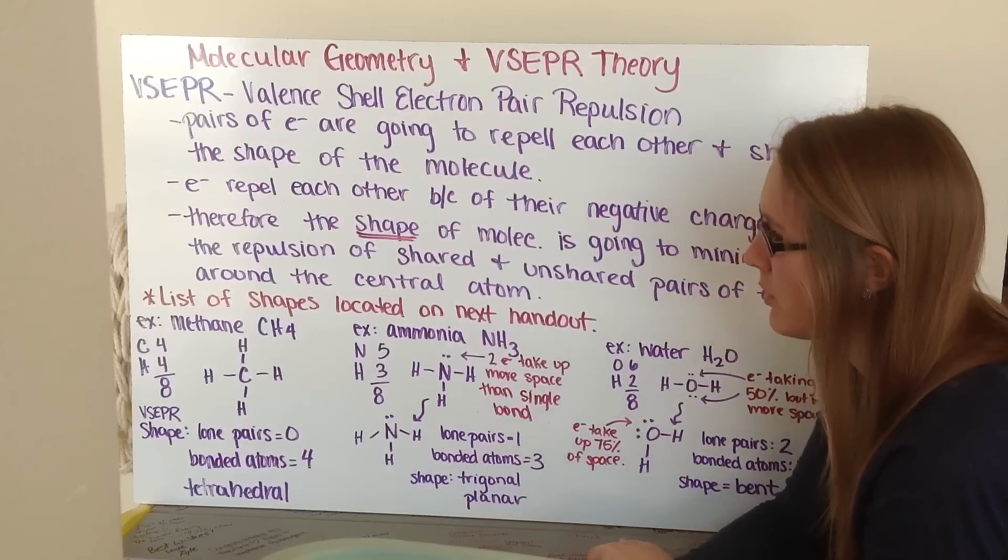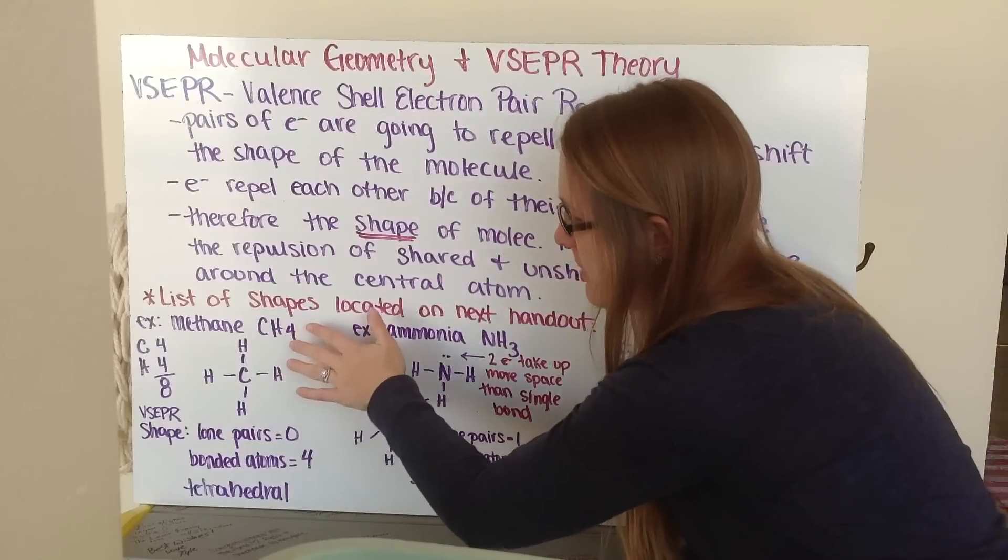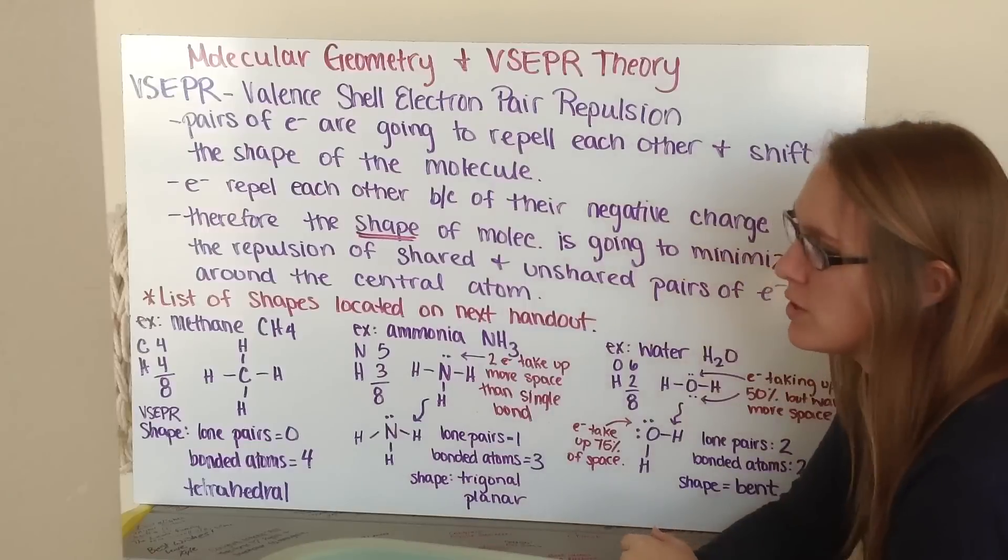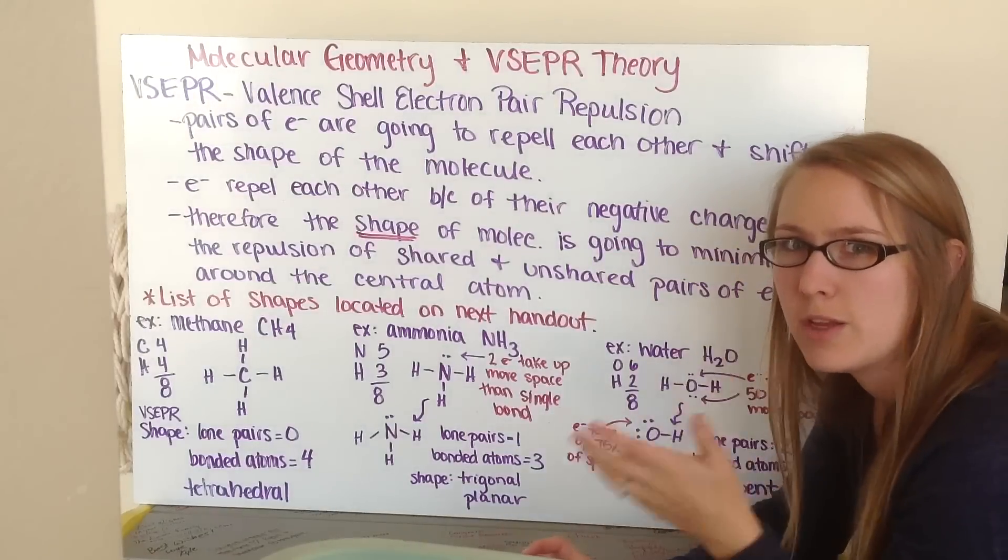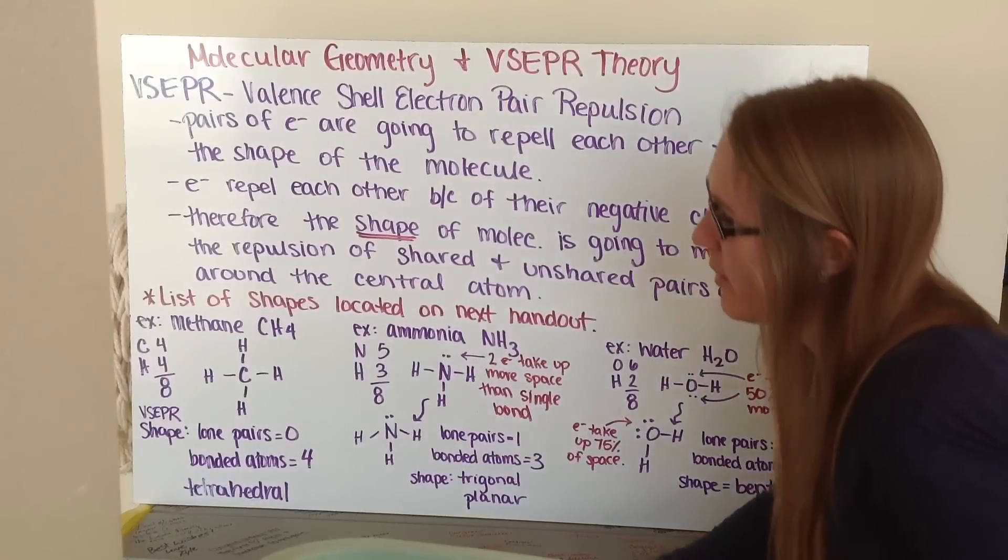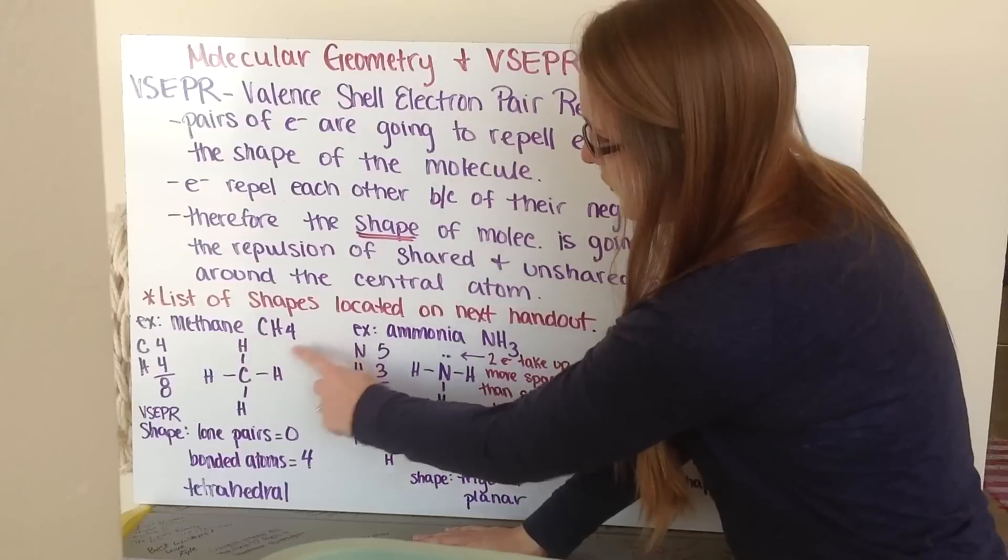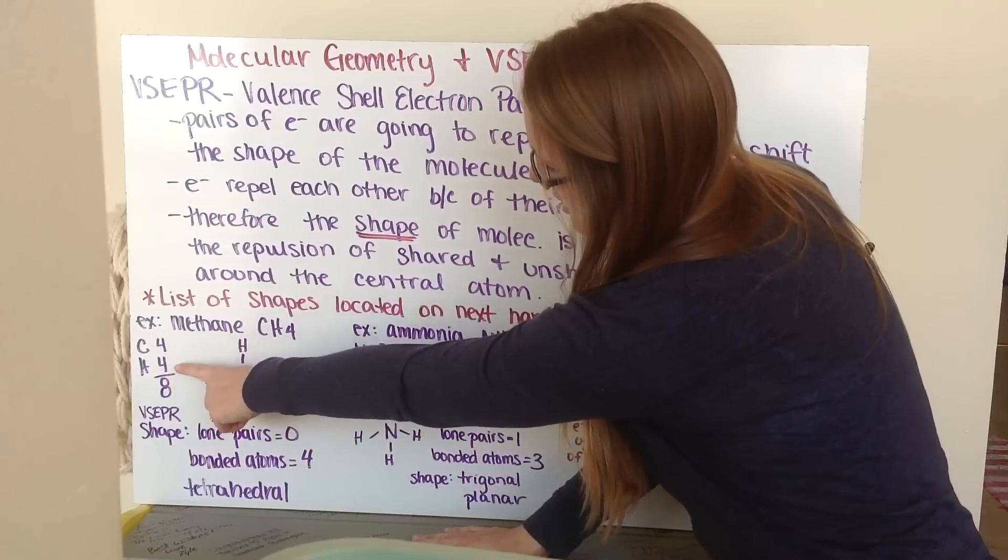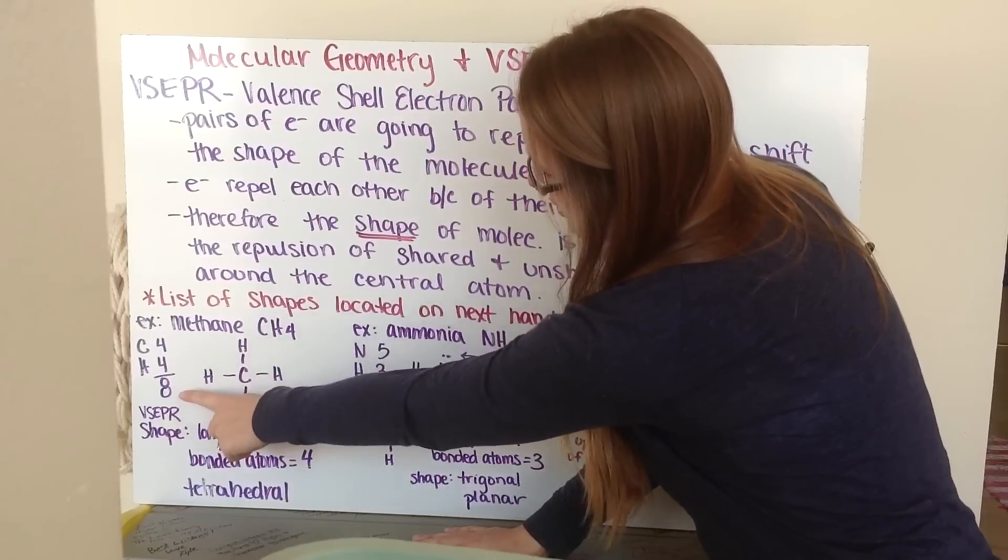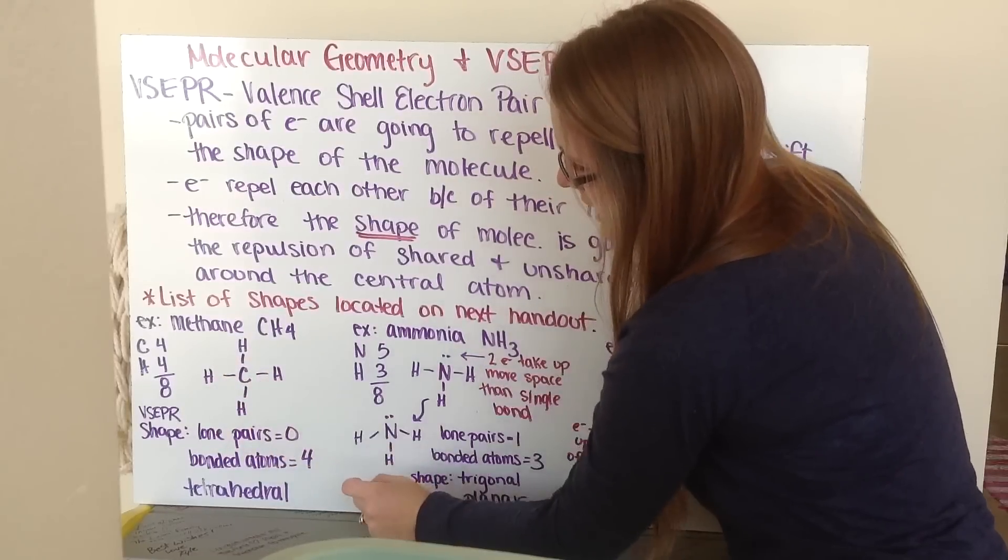As we go through our examples, we have our example here of methane. The first thing we want to do is draw our Lewis structures. Now you've spent the last day or two drawing Lewis structures. You can draw the Lewis structure for methane. It's CH4, so carbon has its four electrons, four hydrogens, so four more electrons—eight valence electrons total. I draw it in and fill everybody's octet.